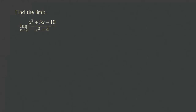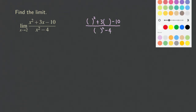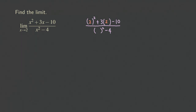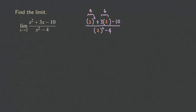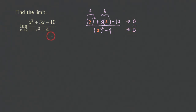The numerator has the form of something squared plus 3 times something minus 10, and the denominator has the form of something squared minus 4. We plug in 2: the numerator gives 2 squared which is 4, plus 3 times 2 which is 6, so 4 plus 6 minus 10 equals 0. The denominator gives 2 squared minus 4, which is also 0. So we have 0 over 0, which tells us we can use L'Hôpital's rule.